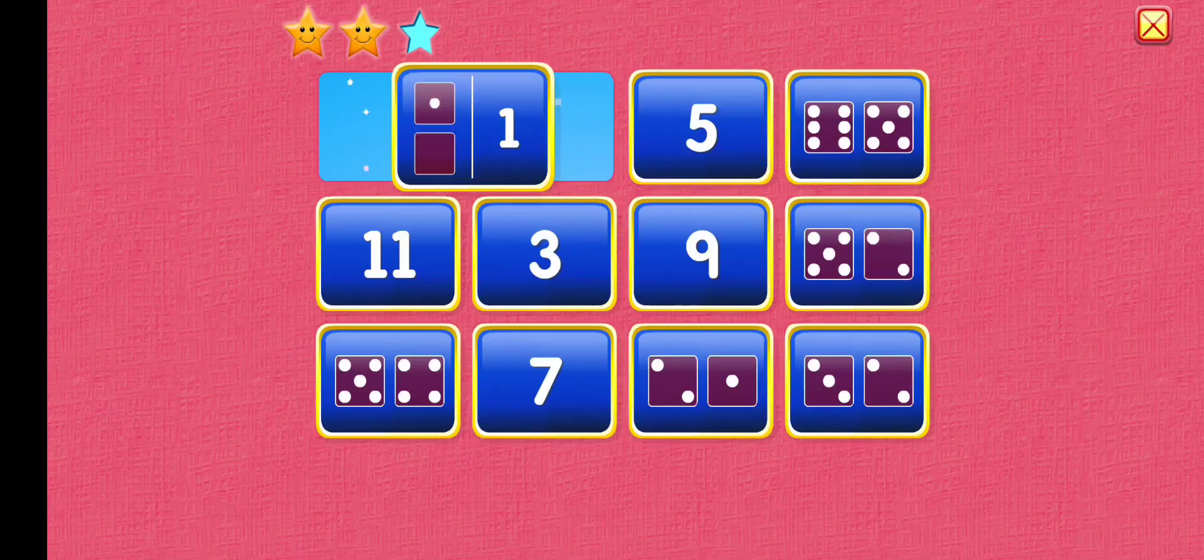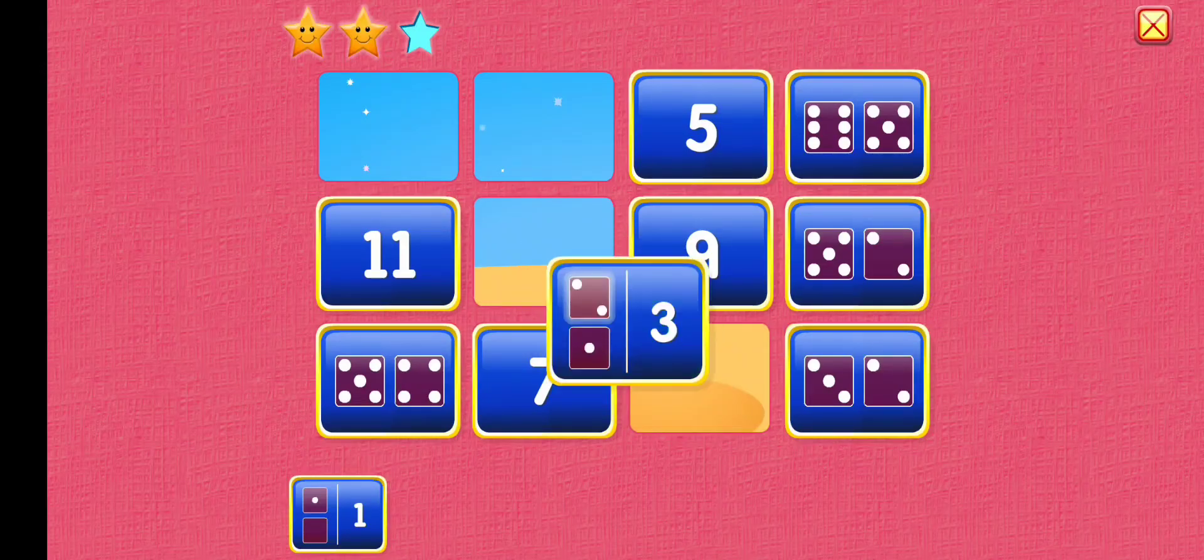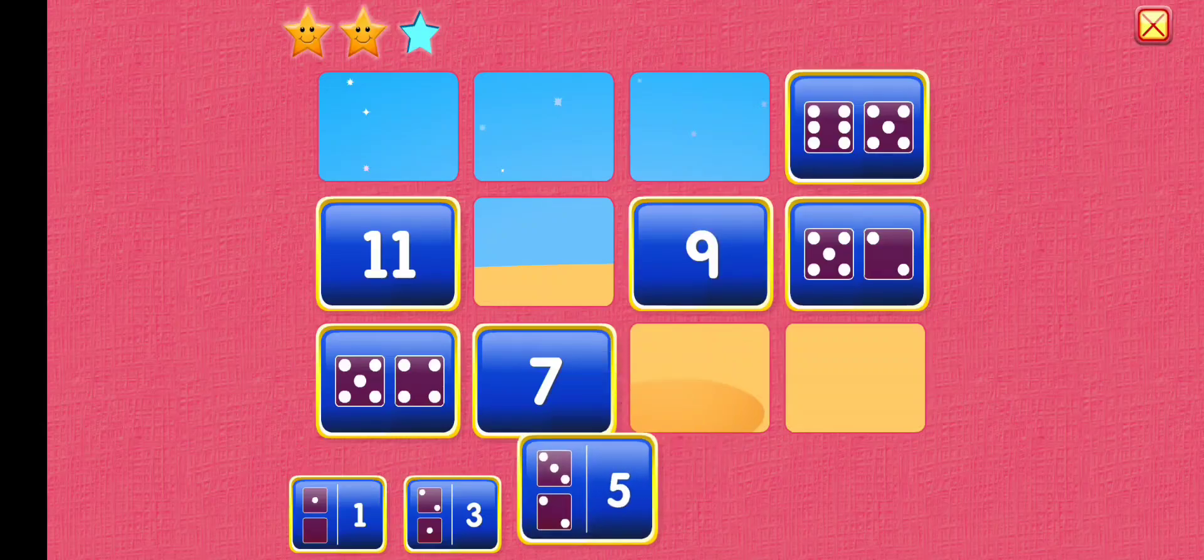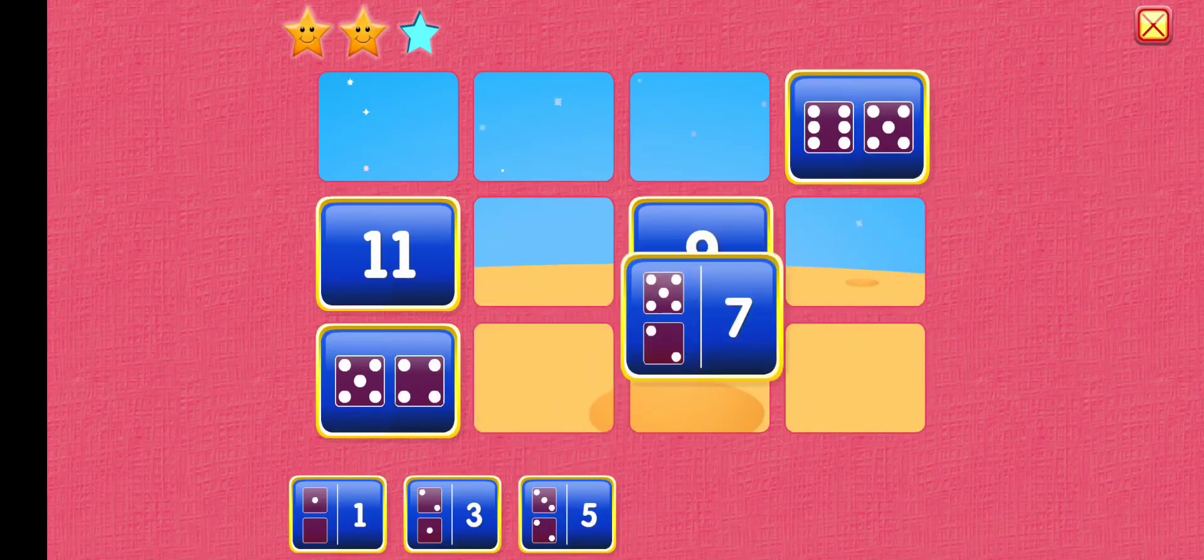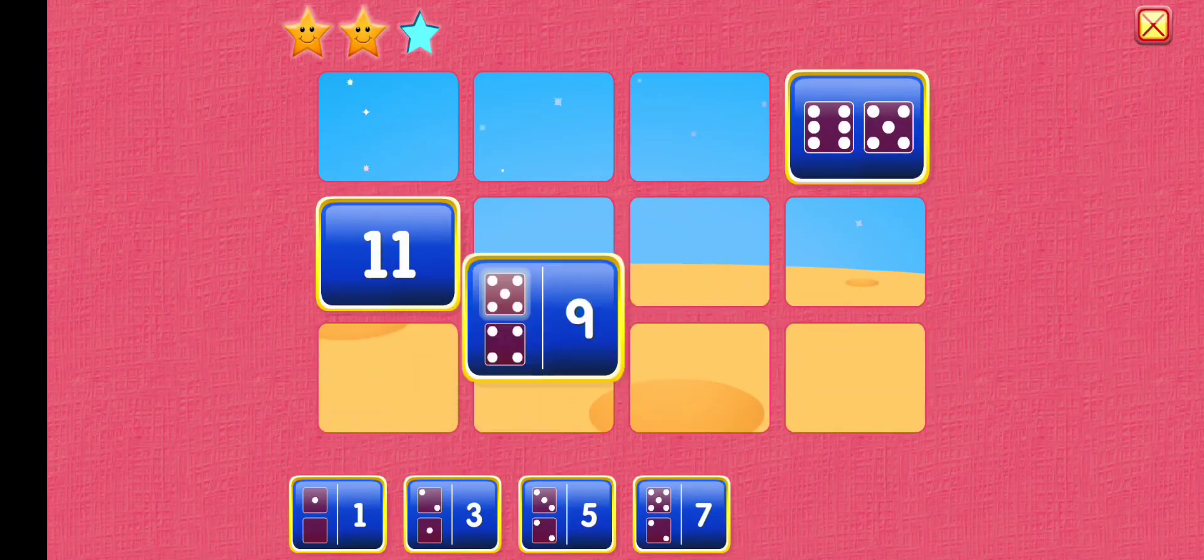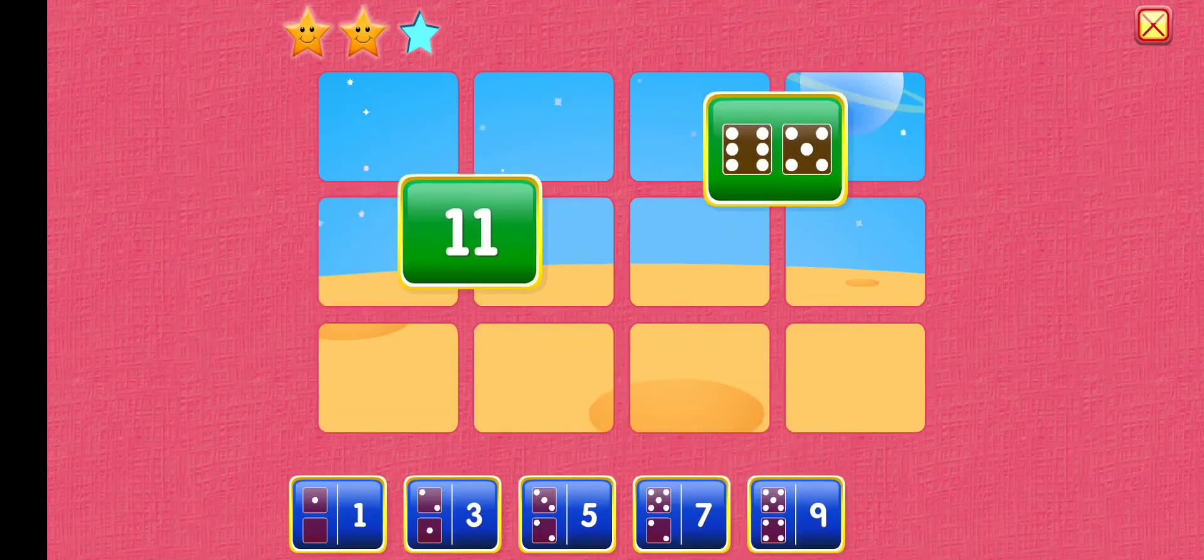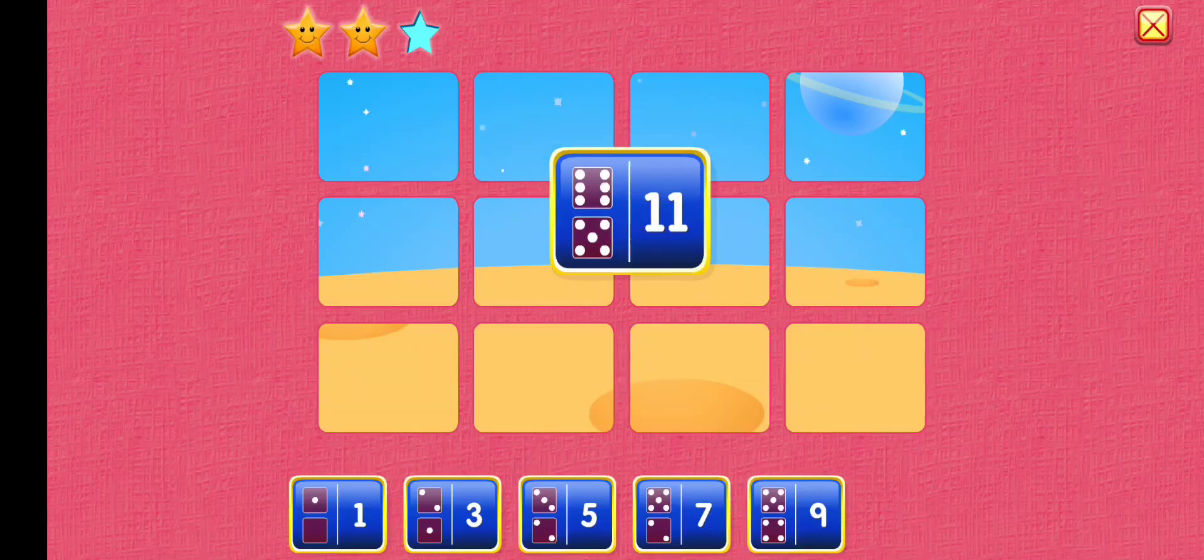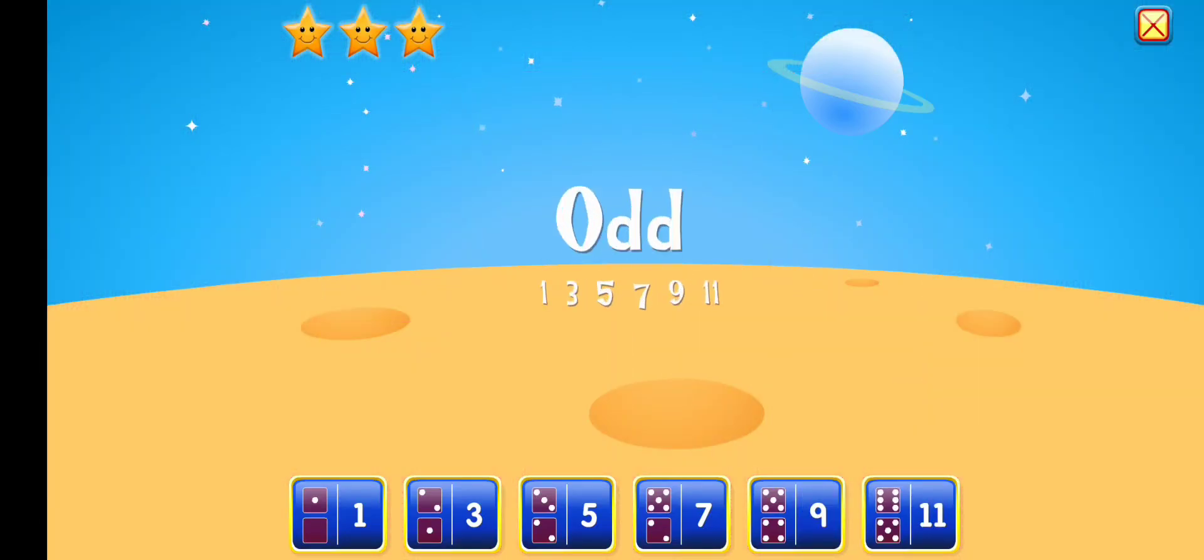1 plus 0 equals 1. 2 plus 1 equals 3. 3 plus 2 equals 5. 5 plus 2 equals 7. 5 plus 4 equals 9. 6 plus 5 equals 11. Odd.